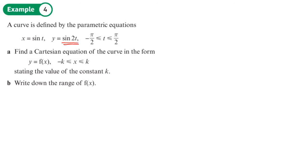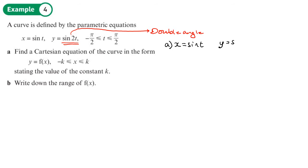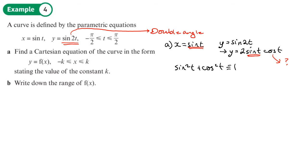For this next example, we have x = sin t and y = sin 2t. We can't use the previous method because of the double angle, but I notice it is a double angle, so I'll use the double angle formula. Using that formula, y = sin 2t becomes y = 2 sin t cos t. We can substitute x = sin t into this, but we still need to deal with the cos t.